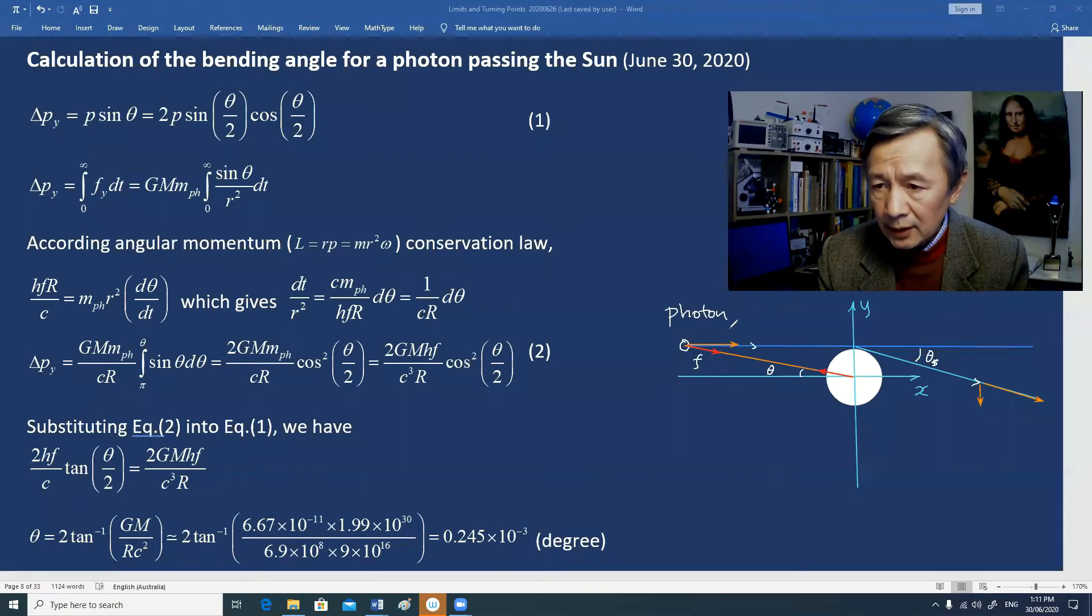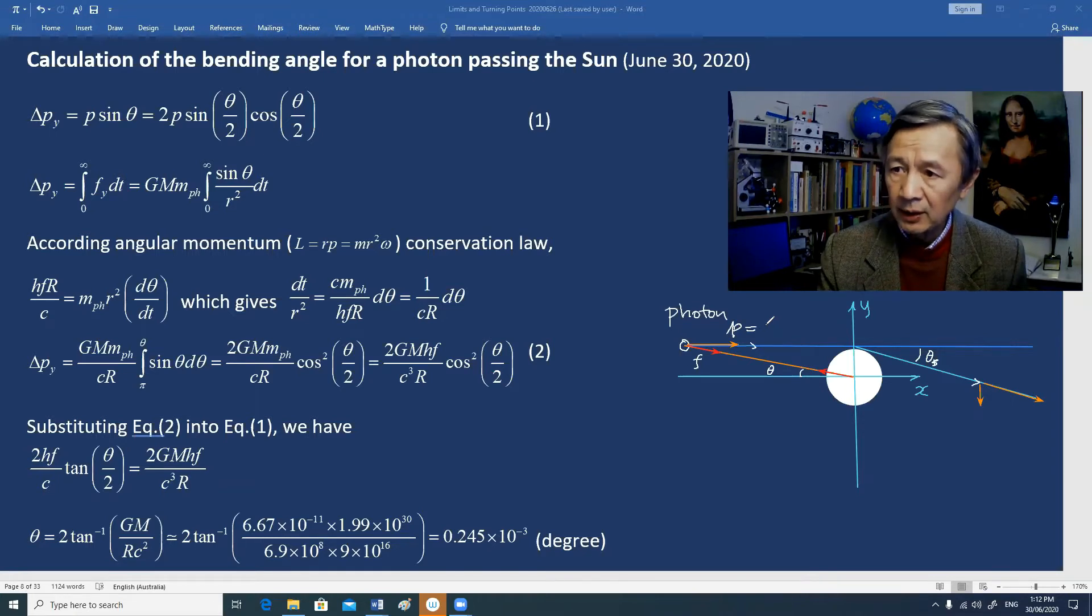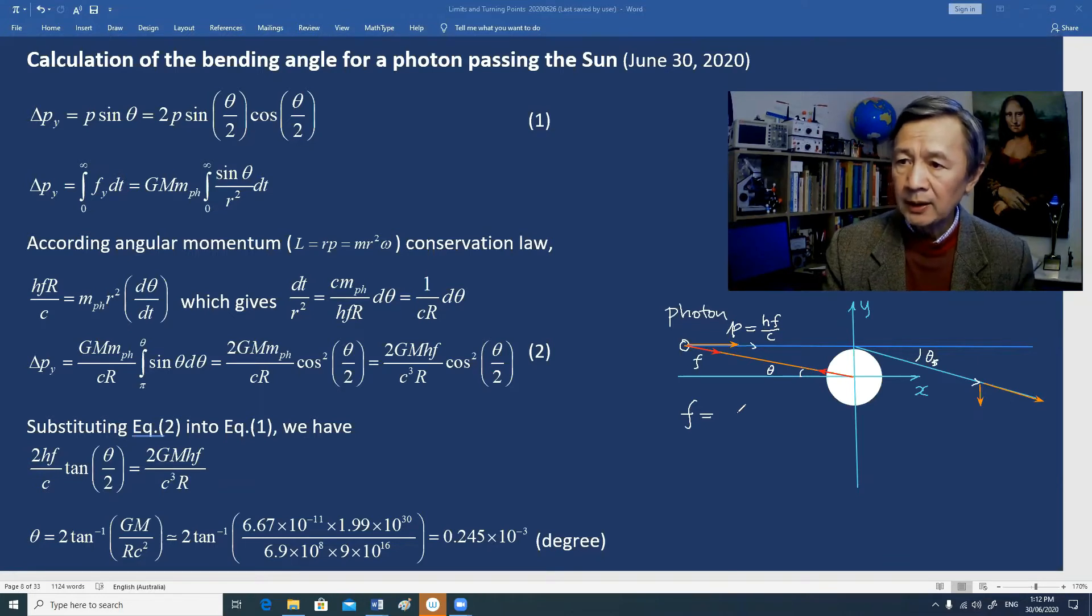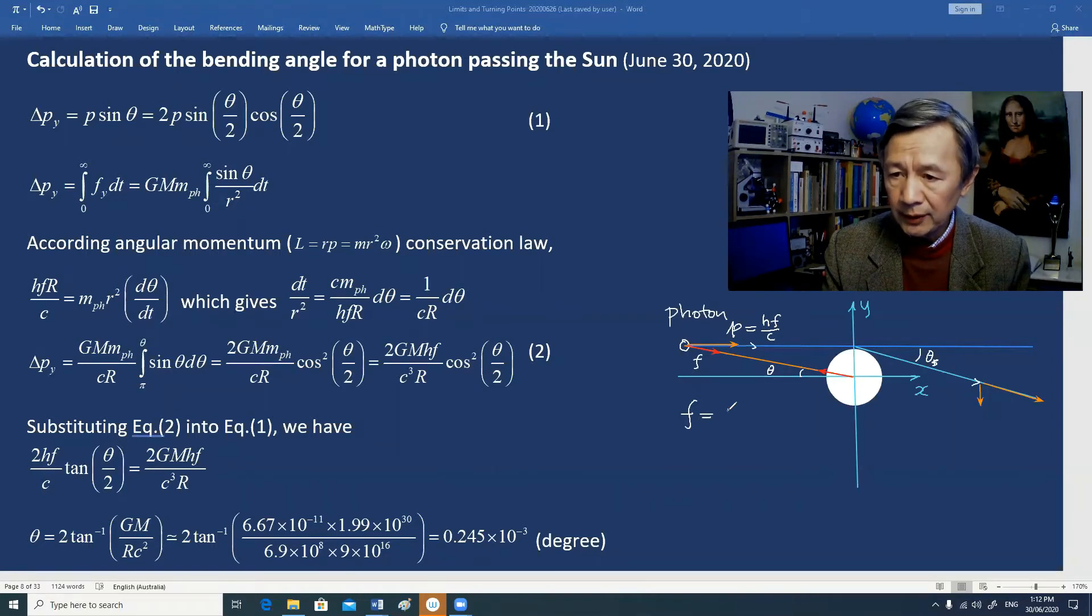The initial momentum of the photon, according to Einstein's special relativity and Planck's law of photon energy, can be written as hf divided by c. The force between the two objects is merely gravitational force.